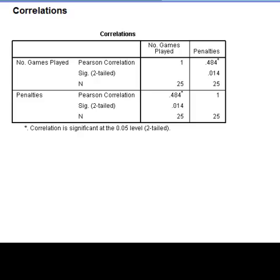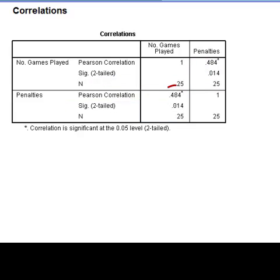In the output window, we are then provided with the correlation matrix. We can read this output as either penalties by games or games by penalties. Looking at the correlation between the two variables, we see that the Pearson correlation coefficient is 0.484 with a two-tailed p-value of 0.014. Therefore, if we were using an alpha value of 0.05, we would reject the null and conclude that there is a positive association between these two variables.